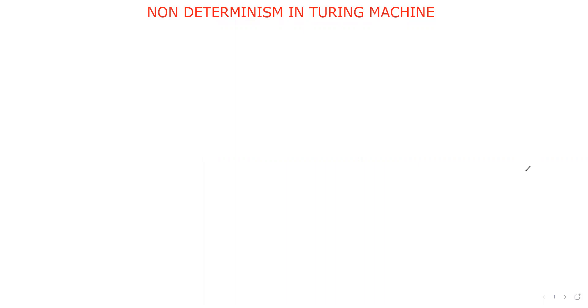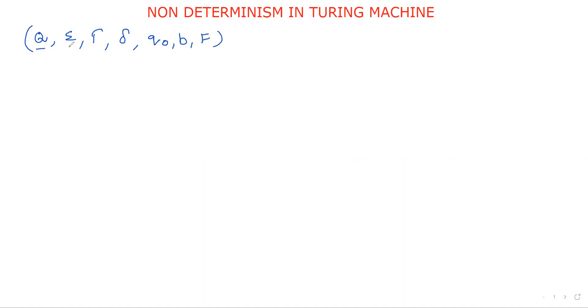Hi friends, welcome to our channel. In this session we will move to non-deterministic Turing machines. We already know the seven-tuple representation of a Turing machine: Q, sigma, lambda, delta, q-naught, B, F. We know the meaning of the terms: non-empty set of states, set of input symbols, set of tape symbols, transition function, initial state, blank symbol.